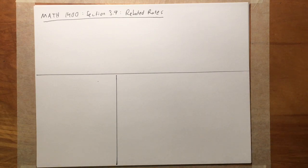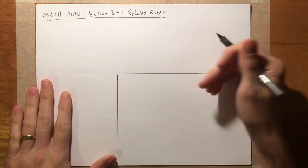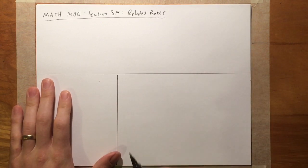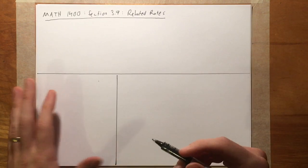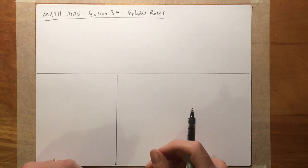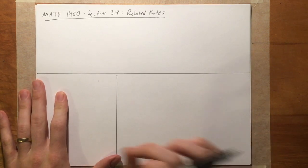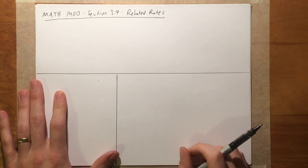We are here at section 3.7, Related Rates — one of my favorite subjects in Calc 1. The idea of related rates is that in real life, when you have quantities that are related to each other with some sort of dependence, and things are changing over time, then not only are the quantities related, but the rates at which they're changing are also related. We'll look at application-type problems using implicit differentiation from the previous section.